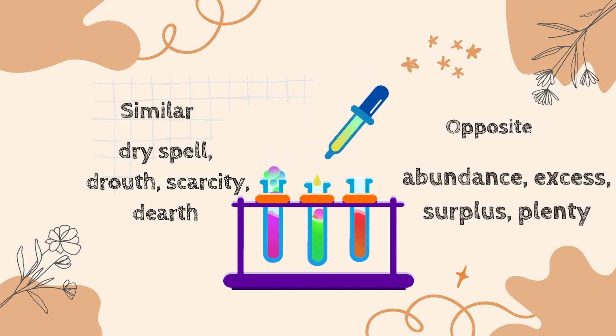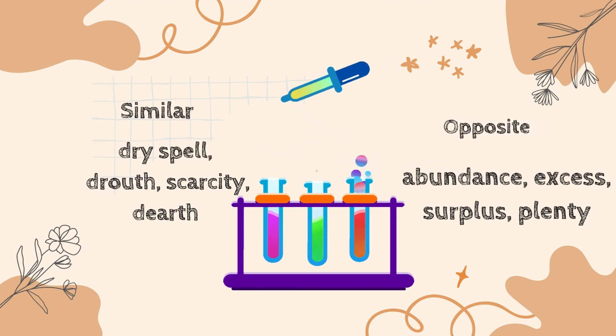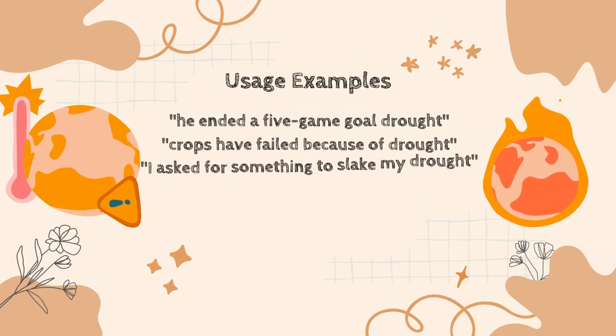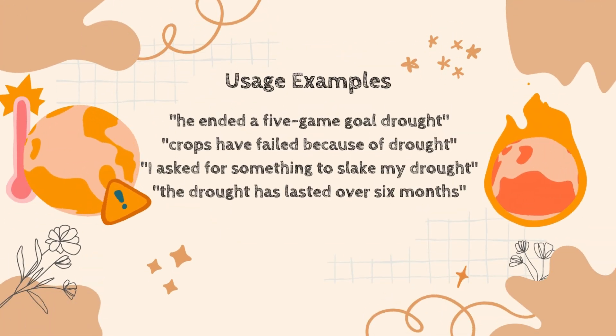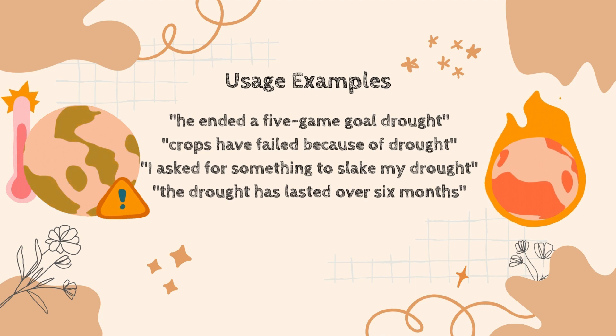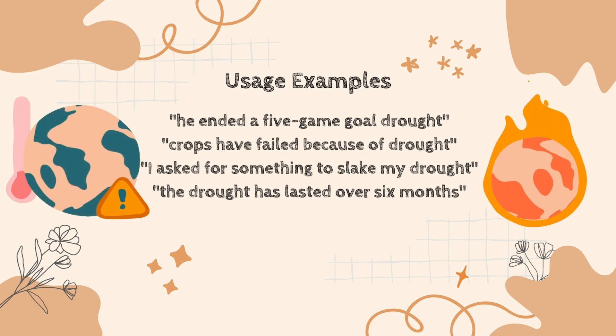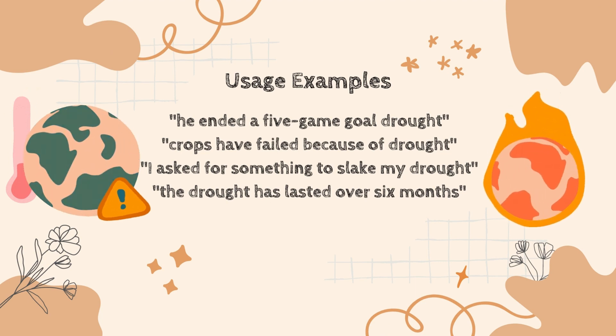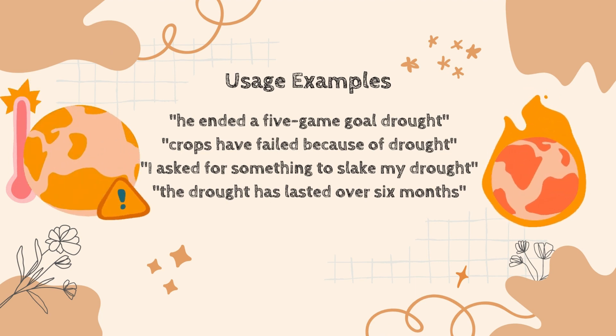The final phase of the video is where we learn the practical usage of the word of the day. We can use drought as follows: 'He ended a 5-game goal drought.' 'Crops have failed because of drought.' 'I asked for something to slake my drought.'